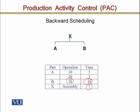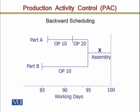The assembly of X will be completed in 5 days — meaning 50 units of X can be assembled within 5 days. If we develop backward scheduling, our due date is day 100. It takes 5 days to complete X, so X should start on the 95th day and will be complete by day 100.